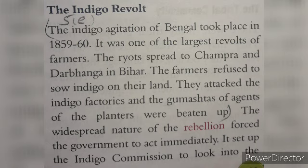The Indigo Revolt means नील विद्रोह। The Indigo Agitation of Bengal took place in 1859–60. It was one of the largest revolts of farmers. The revolts spread to Champaran and Darbhanga in Bihar. The farmers refused to sow indigo on their lands. They attacked the indigo factories and the gomasthas (agents of the planters) were beaten up.